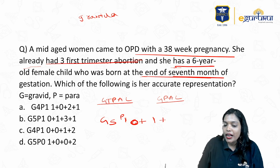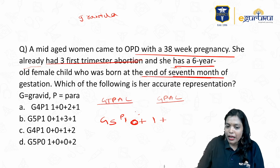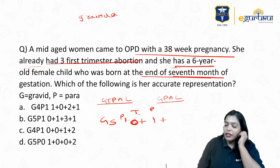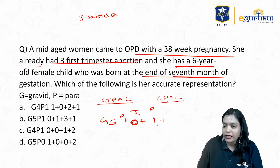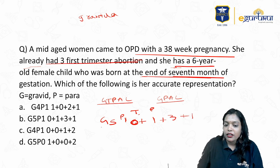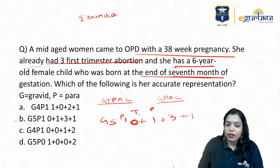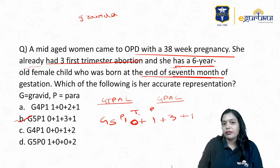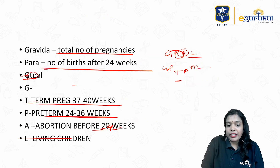So T stands for term and P stands for preterm. How many abortions did she have? She had three abortions, plus one living child. So for G-T-PAL the interpretation will be G5, and under Para: 0 term, plus 1 preterm, plus 3 abortions, plus 1 living.